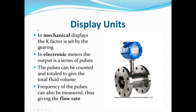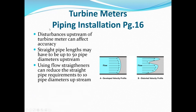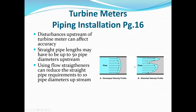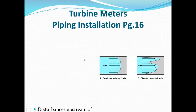Piping and installation considerations: we want a fully developed flow profile, achieved naturally or using straightening vanes or flow conditioning. Disturbances upstream can affect accuracy. Straight pipe lengths may need to be up to 50 diameters upstream. Using flow straighteners can reduce this requirement down to 10 diameters upstream. That's why the construction generally includes engineering design to straighten out that flow.